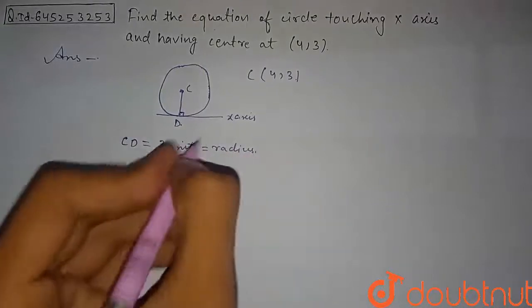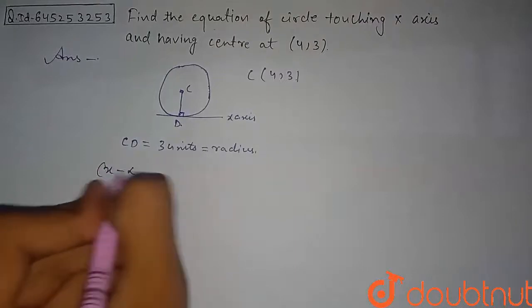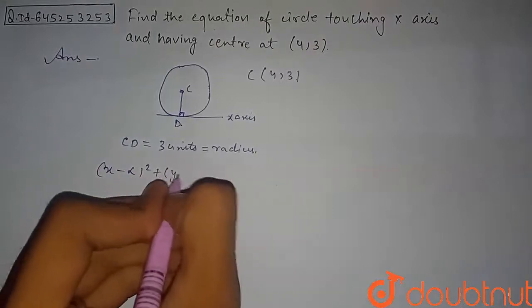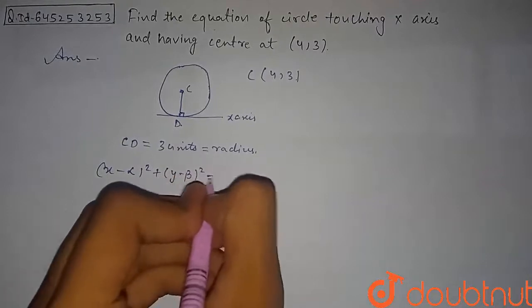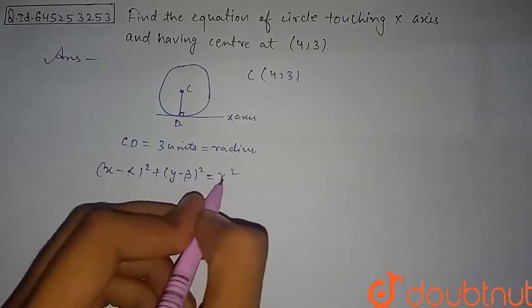So here we will just use the format of the circle in terms of center and radius, which is (x - α)² + (y - β)² = R². This is the general circle equation in terms of alpha beta is the center and R is the radius.